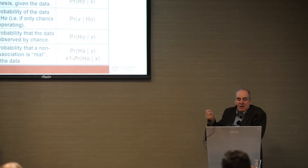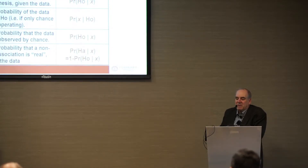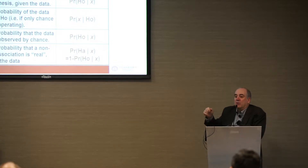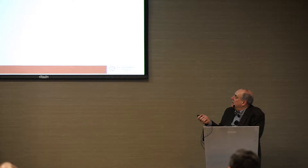It's not the probability that the data were observed by chance. For example: I could take a coin, flip it 10 times, and get 10 heads. The probability of that is one in 1,024. But the probability that was produced by chance? 100% — it's a fair coin. The probability that, if only chance were operating, you'd observe that data is one in 1,000. But the probability that chance produced it is 100%. This is a very subtle way of asking what's the probability of the null hypothesis, and we don't get past that.